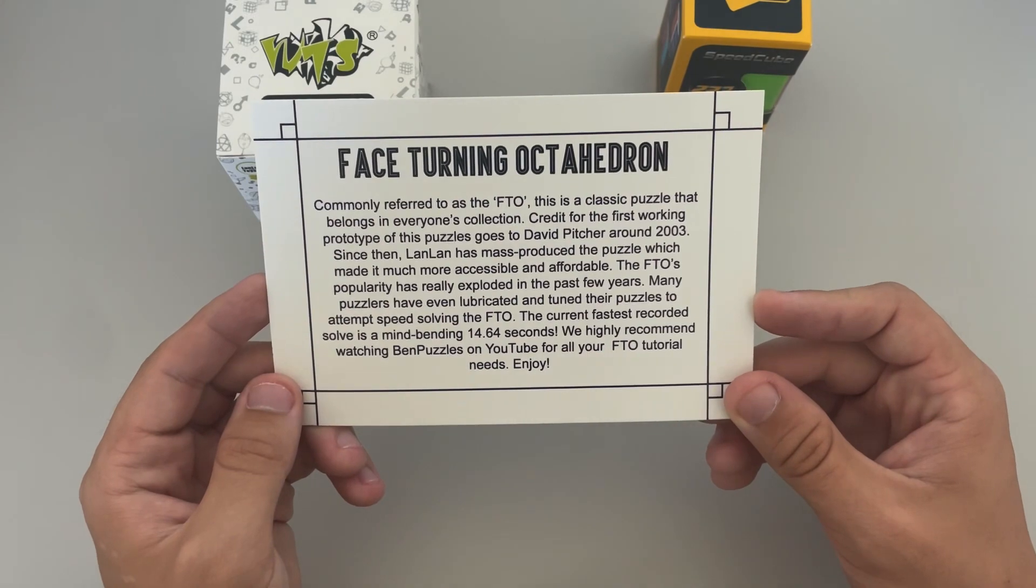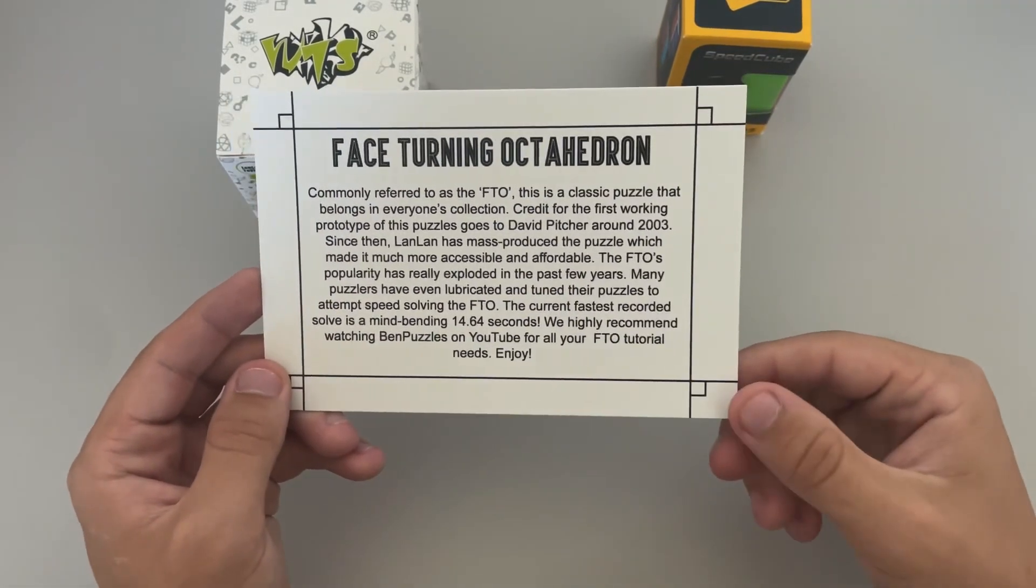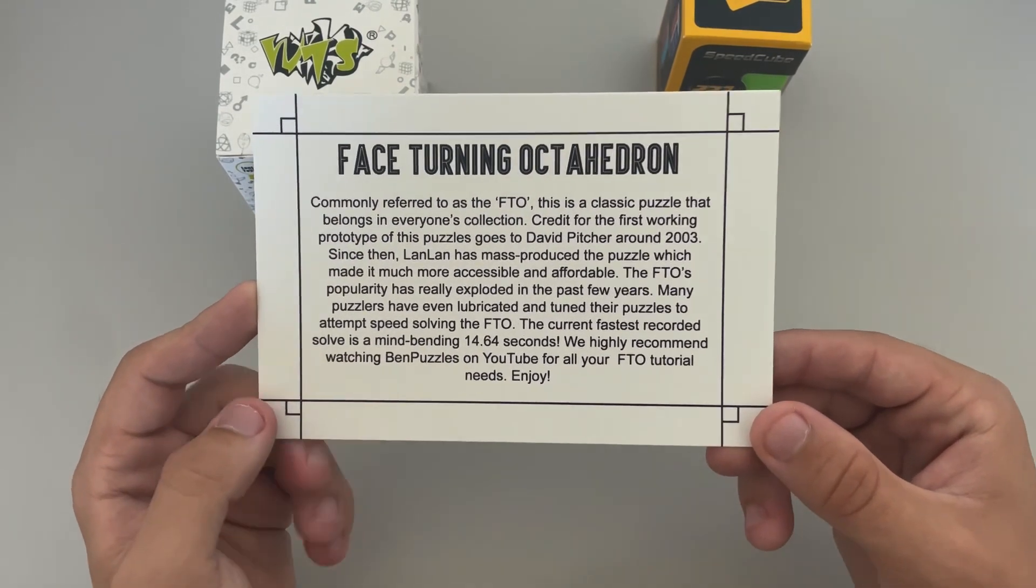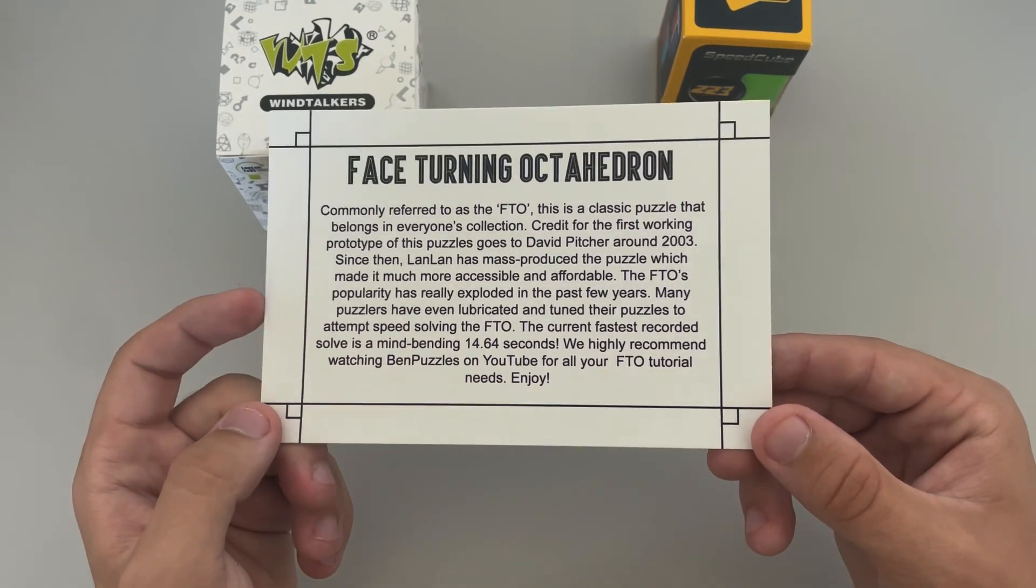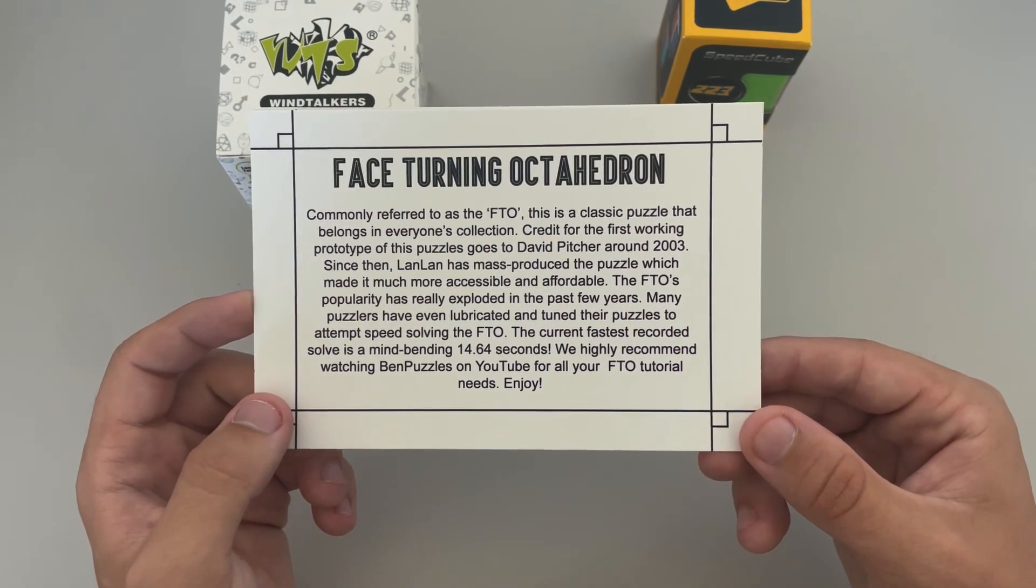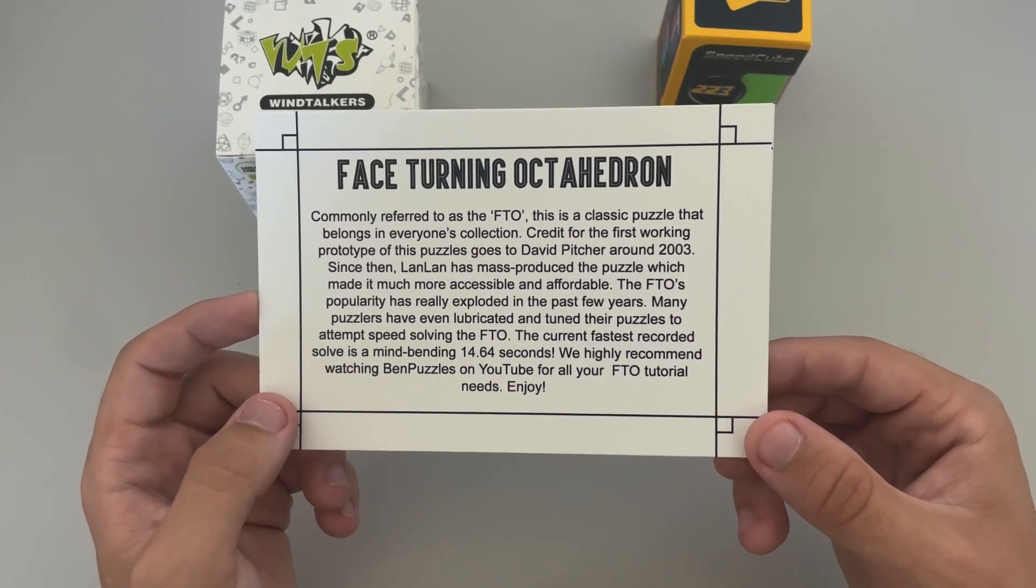The FTO's popularity has really exploded in the past few years. Many puzzlers have even lubricated and tuned their puzzles to attempt speed-solving the FTO. The current fastest record to solve is a mind-bending 14.64 seconds. We highly recommend watching Ben Puzzles on YouTube for all your FTO tutorial needs.